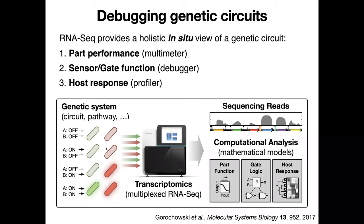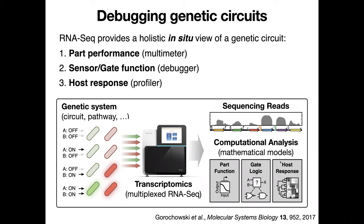We begin by sampling our system in all the possible states it can take. We then process these samples using a highly multiplexed RNA sequencing method, and use this data to generate transcriptional profiles that capture the RNA polymerase flow along the entire length of the circuit. Using these profiles, we can interpret them with basic mathematical models to start inferring how individual parts are functioning, as well as how the cell is responding to the circuit.